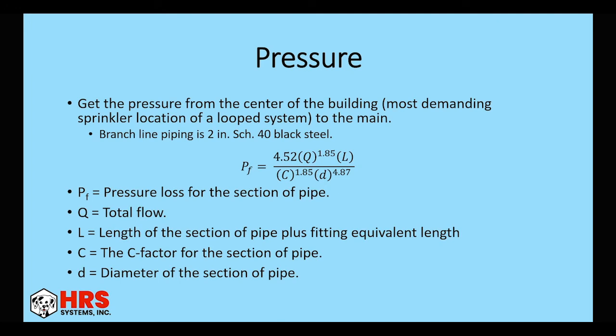So then we want to get our starting pressure, which is obviously our flow out of an individual sprinkler over our K-factor squared. So for this example, it's 24 divided by 8 squared to give us 9 PSI. From there, we use the Hazen-Williams. We're going to say our branch lines are 2-inch Schedule 40 black steel. Again, this is a seismic zone. So we didn't want to go over 2-inch. So we didn't have to brace as much. So again, just normal Hazen-Williams formula.